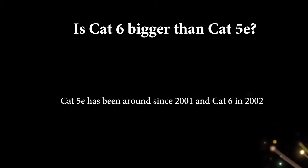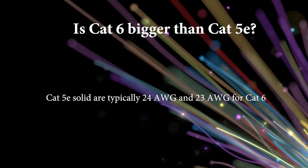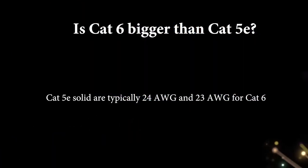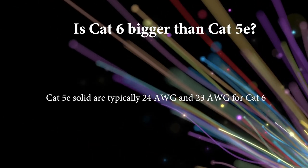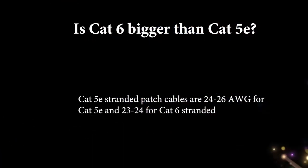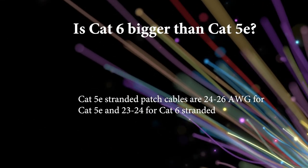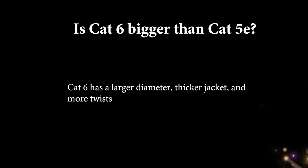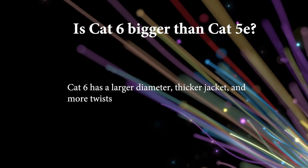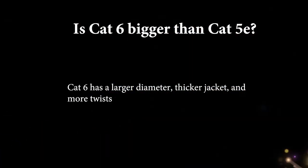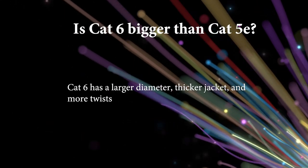Cat 5E has been around since 2001 and Cat 6 since 2002. Cat 5E solid cables are typically 24 gauge twisted pair wires and, when used for horizontal cabling, can support a gigabit network at distances up to 328 feet. Stranded cables are mostly used for patch cables and typically come in 24 to 26 gauge for Cat 5E and 23 to 24 gauge for Cat 6 stranded. Cat 6 solid cables are generally larger with 23 gauge wires, thicker jacket, and tighter twists. Cat 5E cable features 1.5 to 2 twists per centimeter, while Cat 6 cables are more tightly wound and feature two or more twists per centimeter.